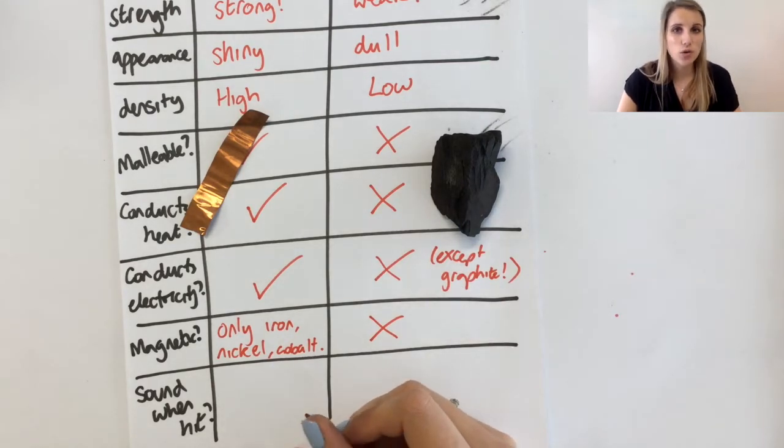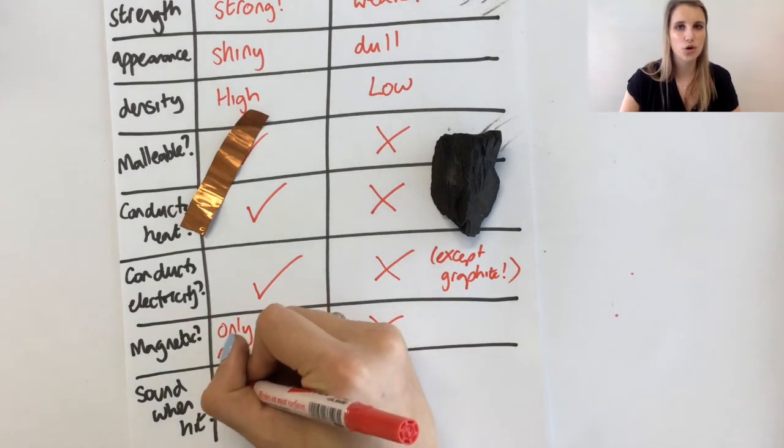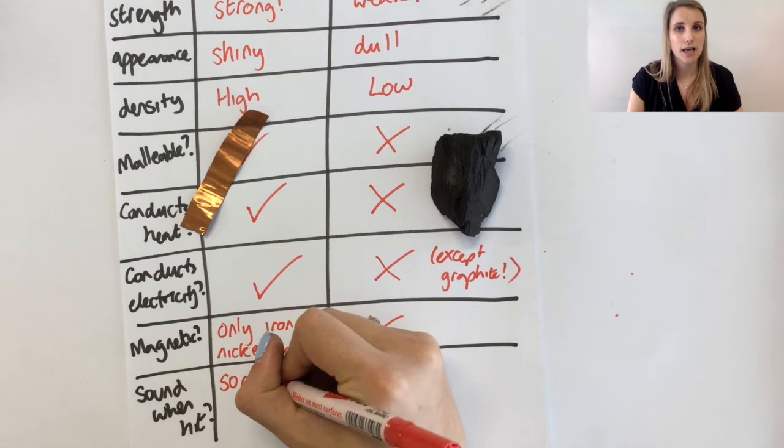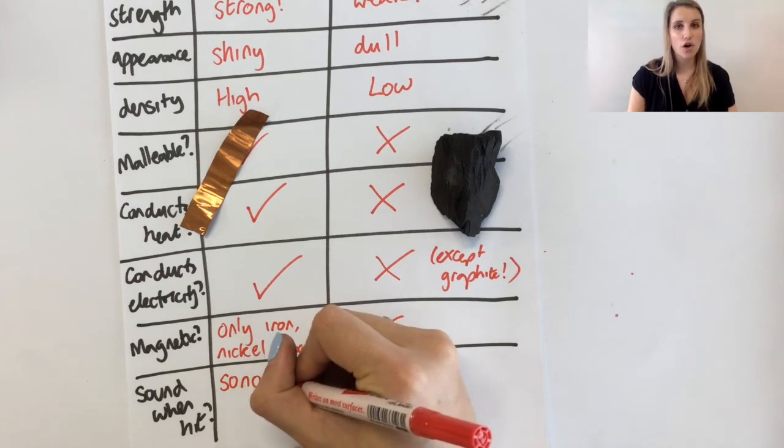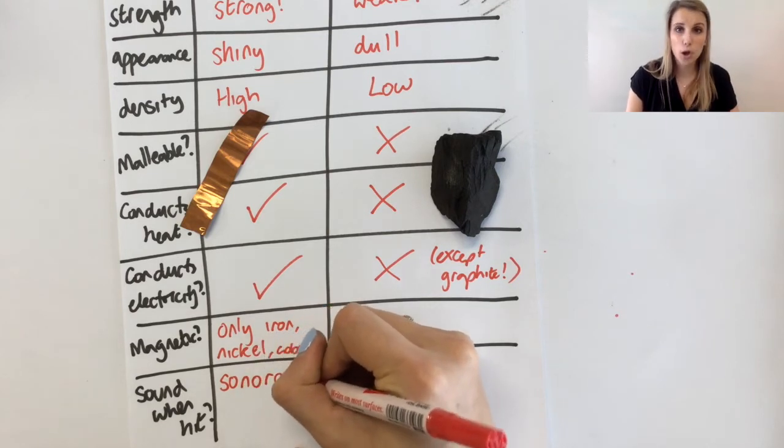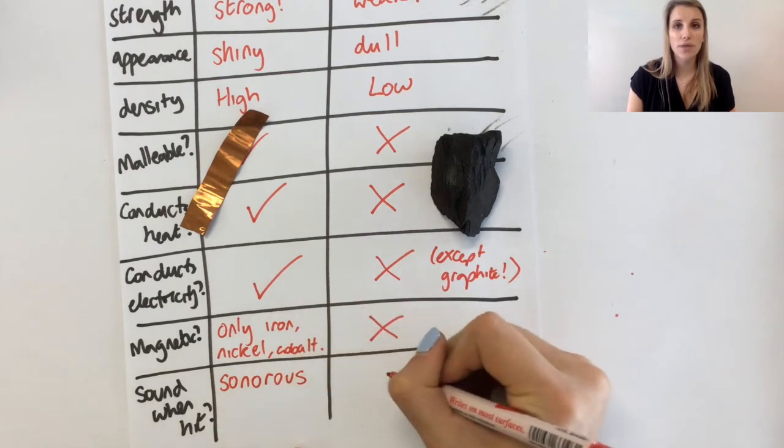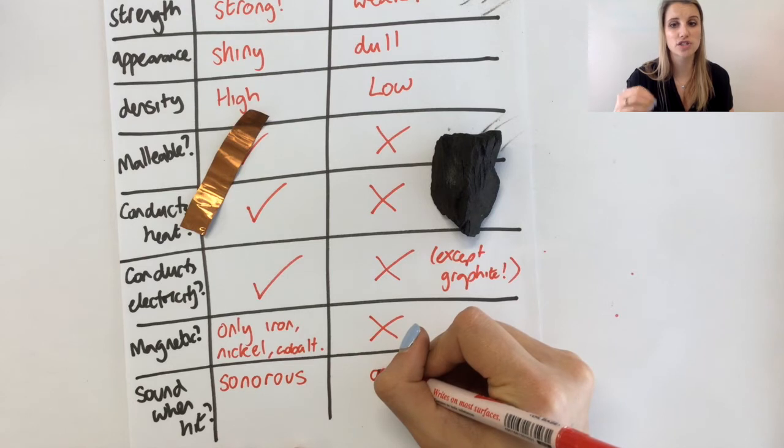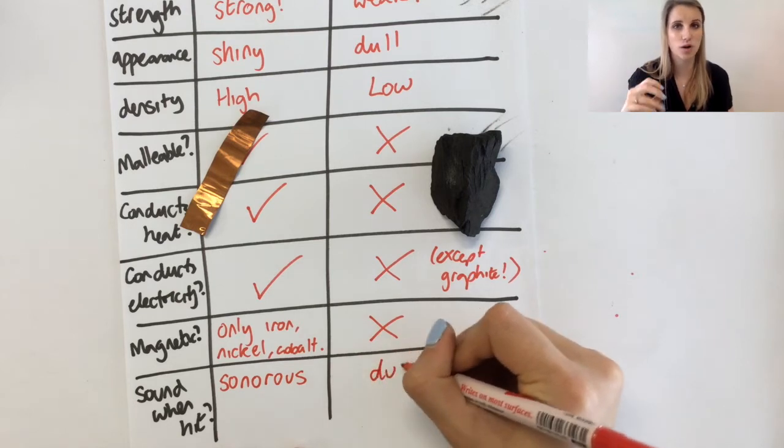Sound when hit. We call this, is it sonorous or not? Does it make a nice ringing sound when you hit it? Now metals we use in a lot of musical instruments, like trumpets and trombones, and from that we use the property of metals that is that they are sonorous. Sonorous meaning they make the ringing sound when they're hit.